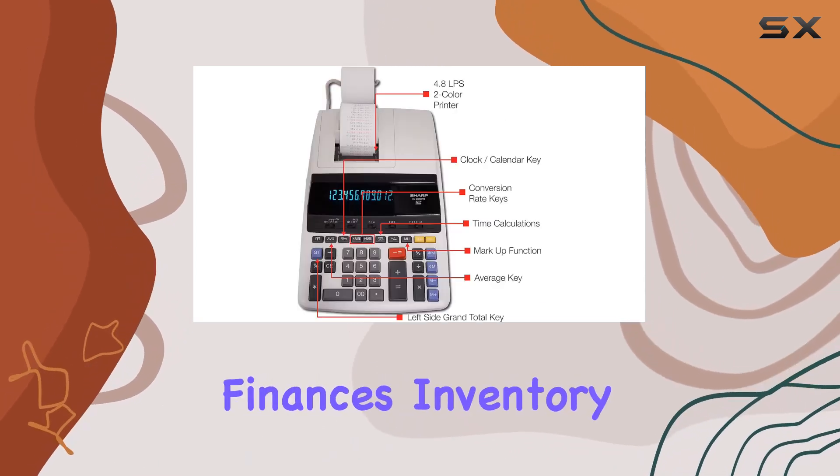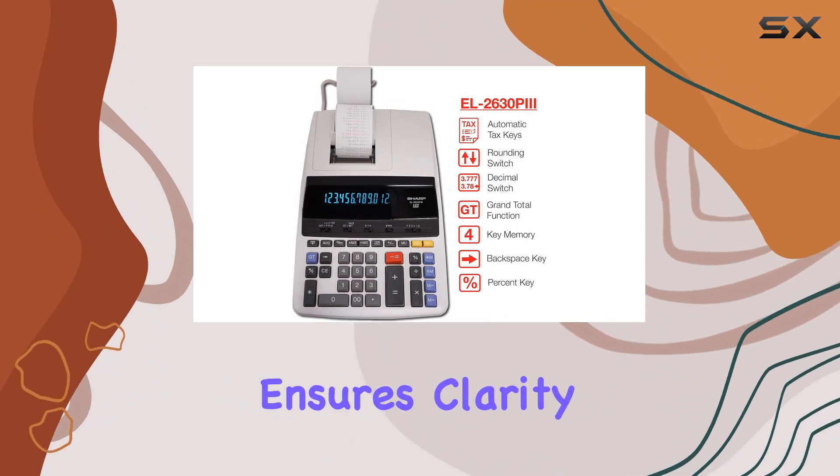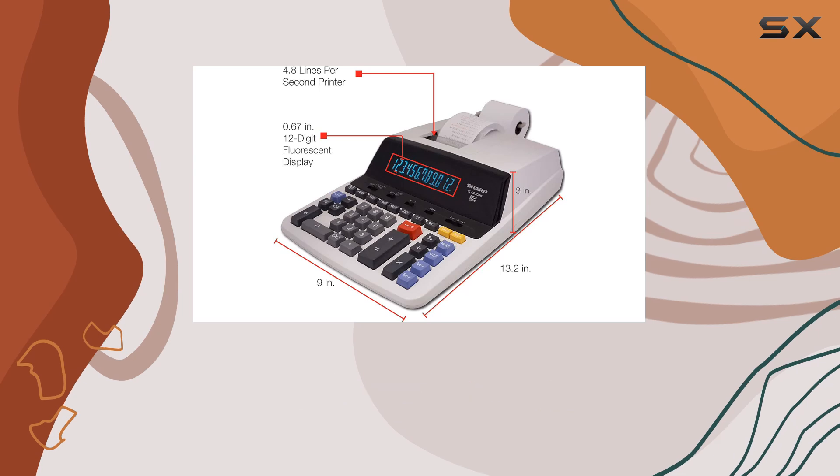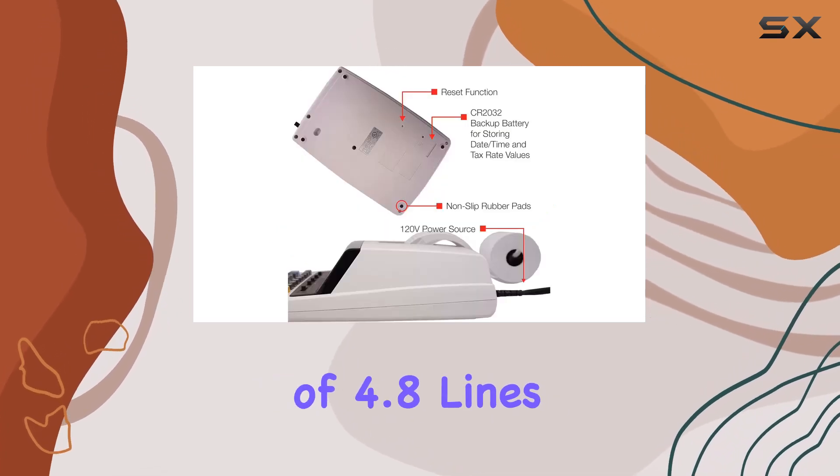Whether you're crunching numbers for finances, inventory, or any other business needs, this calculator ensures clarity and precision in every calculation. A standout feature of the EL2630PI is its lightning-fast printing speed of 4.8 lines per second.